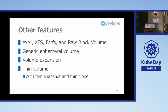That was the main feature of TopoLVM. TopoLVM also has many other features. First, regarding volume type: for file system volumes, TopoLVM supports EXT4, XFS, and BTRFS — covering the three main Linux file systems. TopoLVM also supports raw block volumes. In our case, TopoLVM is used to provide storage for block-based distributed storage. Additionally, TopoLVM supports generic ephemeral volumes, volume expansion, and thin volumes. Thin volumes support snapshot, thin snapshot, and thin clone features. Interestingly, the thin volume feature was not created by Cybos but by Red Hat, as they needed to implement this feature.